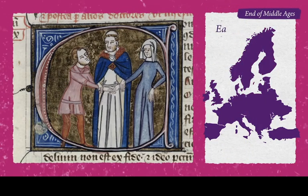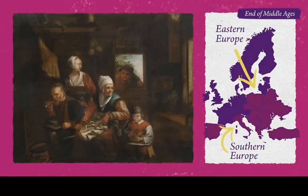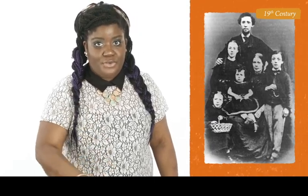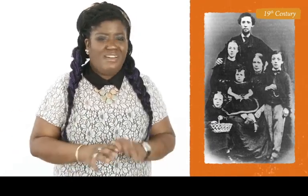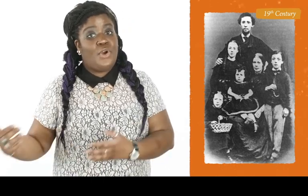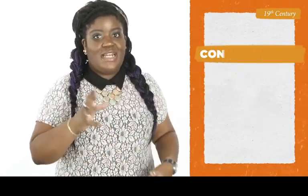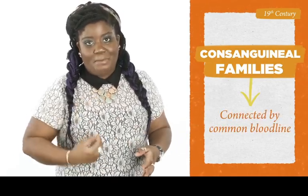By contrast, in the same periods in Eastern and Southern Europe, intergenerational living was much more common, with several generations all living within the same household. But not everyone thought the nuclear family was ideal. In the 19th century, researchers theorized that nuclear families in manufacturing regions of Western Europe might not be the best, since once children left to form their own families it left elder parents alone. There were also other structures practiced, such as conjugal families connected through marriage, and consanguineal families connected by common bloodline.